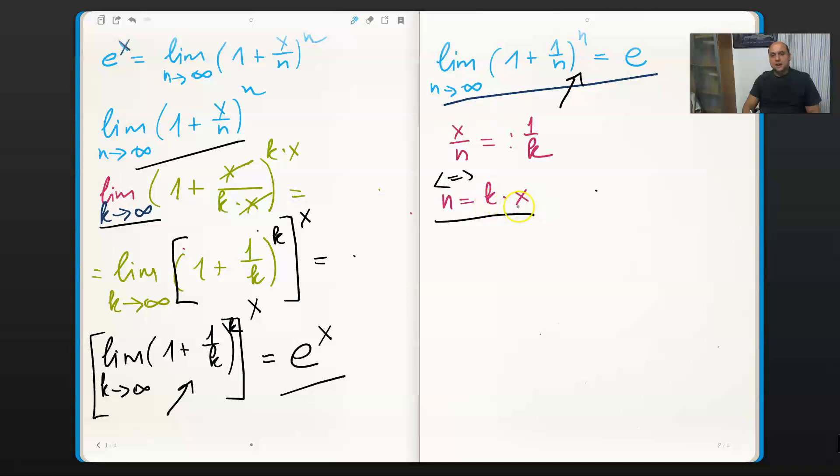Otherwise, as you can see, if x would be negative, k must be negative as well. But for the sake of argument, let's consider x to be positive.